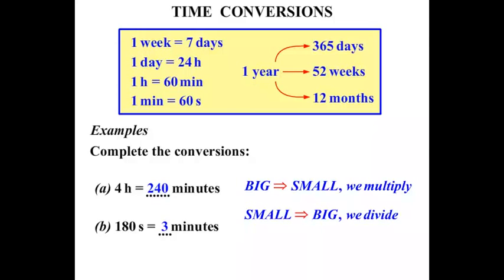In the next one we've got 3 weeks equals how many days. Well what's the connection between weeks and days? We can see that one week equals 7 days. And this time we are changing from weeks to days. We are going from a bigger unit to a smaller one. So we multiply. We multiply by that 7. And 3 times 7 is 21.